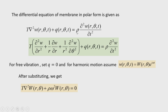Let us investigate the free vibration case to extract the eigenfrequencies and eigenfunctions. For free vibration, we set q = 0 and assume harmonic motion: w(r,θ,t) = W(r,θ) · e^(iωt). When expanded, e^(iωt) gives cosωt + i sinωt, containing harmonic terms. After substituting w(r,θ,t) = W(r,θ)e^(iωt) into the differential equation of motion and differentiating twice with respect to time, the right-hand side becomes −ρω²W(r,θ). The resulting equation is: T∇²W(r,θ) + ρω²W(r,θ) = 0, where ω is the natural frequency of the circular membrane.